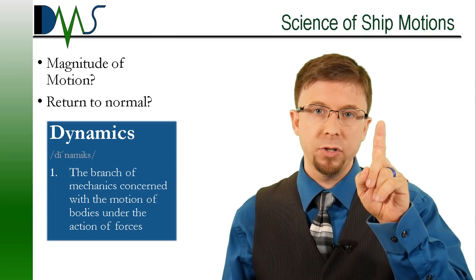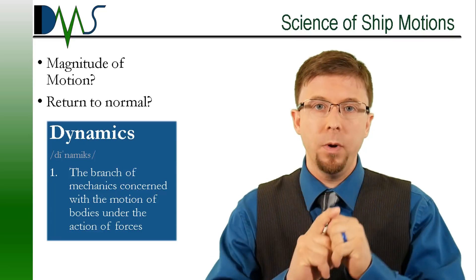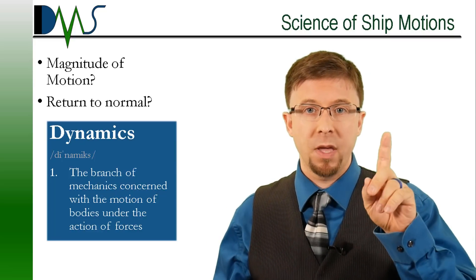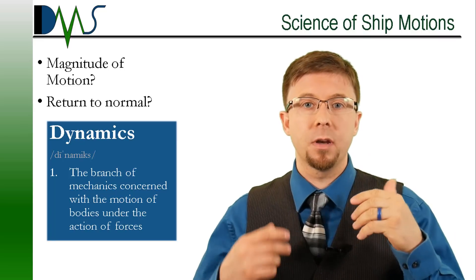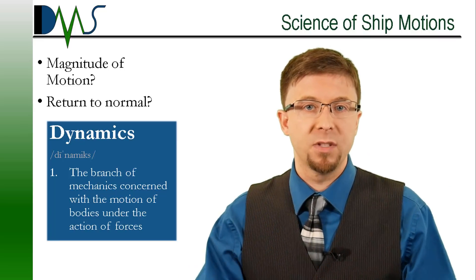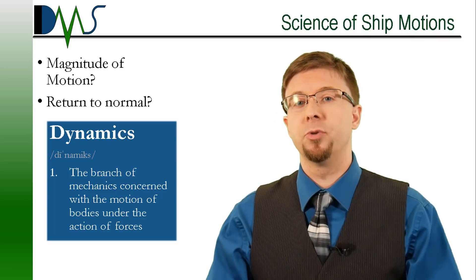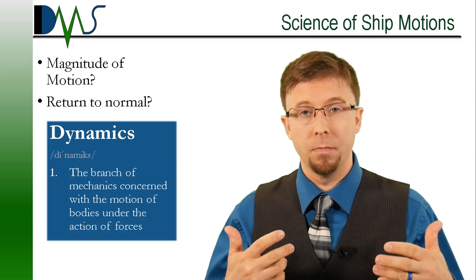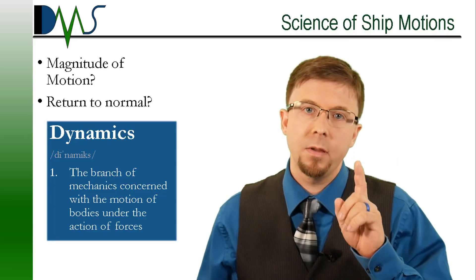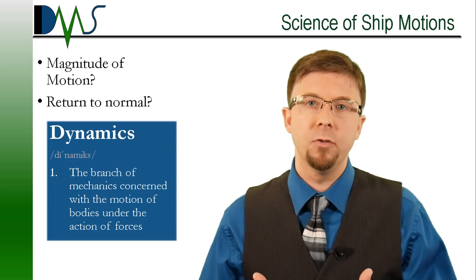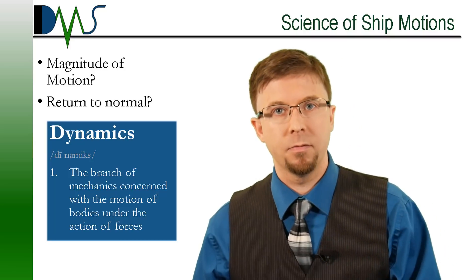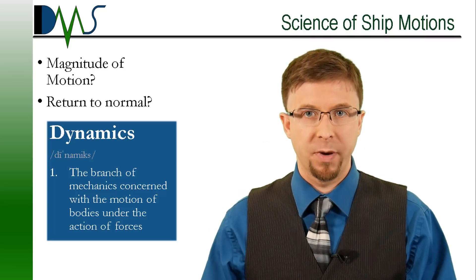The first question was the magnitude of motion, and the second was: will things return to normal? The first branch became seakeeping analysis to predict the magnitude of ship motions, and the second branch became stability analysis to address the question of returning to normal — that is, an upright ship. Seakeeping predicted typical magnitudes of response given a specified wave system. Pay attention to that — that's going to come back to bite us.